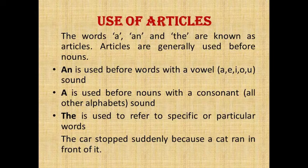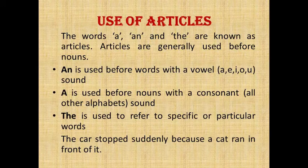'A' is used before a noun with a consonant sound — all other alphabet sounds. 'The' is used to refer to specific or particular nouns. For example: 'The car stopped suddenly because a cat ran in front of it.'